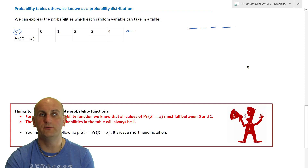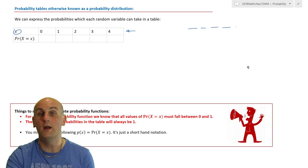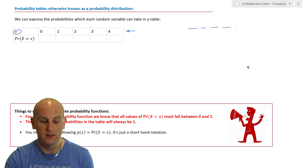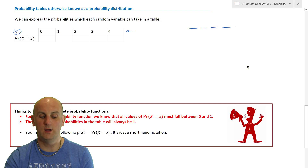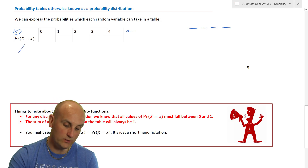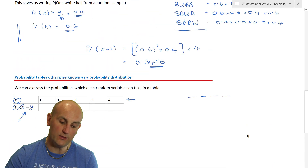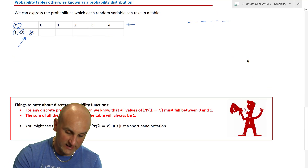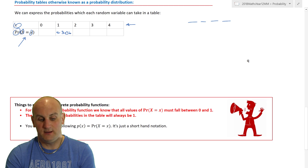So the possibilities are: no white balls at all, one white ball — which we've just worked out — two white balls, three white balls, or all four white balls. We can work out those individual probabilities. We've already established that P(X = 1) = 0.3456.